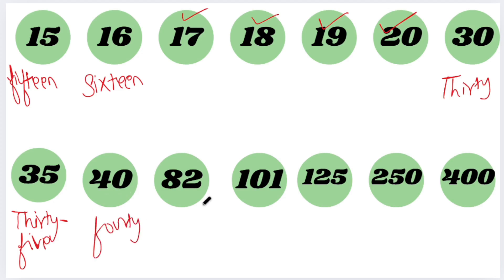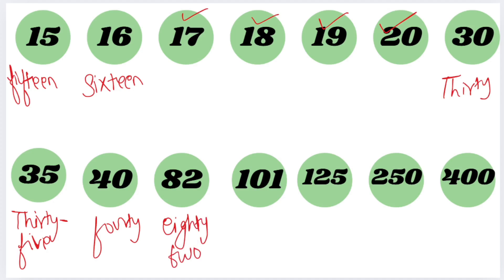This number is 35. We are going to write it as 35. This is 40. What we call this number is 82 — we are going to pronounce it as 82. So how are we going to write this? E-I-G-H-T-Y-T-W-O.